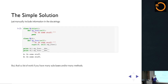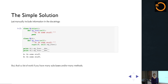The simple solution you might think of is just to include the information manually in the docstrings. That's probably the best solution for simple cases — you just change A and B, you're done. But if you have lots of methods or lots of subclasses, this can get pretty arduous. There should be a better way to do this a little bit more programmatically.